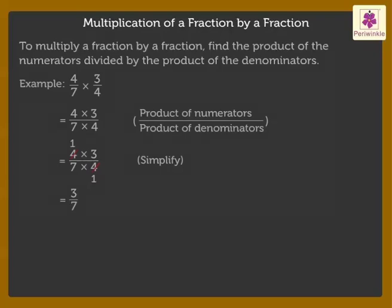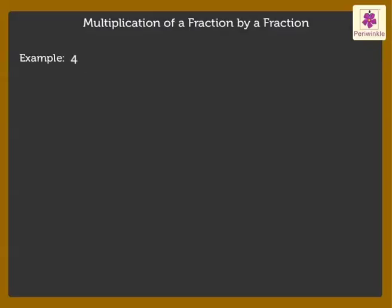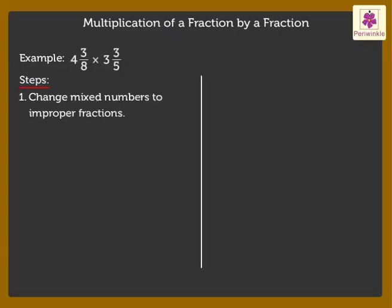Now, let us multiply two mixed numbers. Step 1: Change the mixed numbers to improper fractions. Here, we get the improper fractions as 35 upon 8 into 18 upon 5.